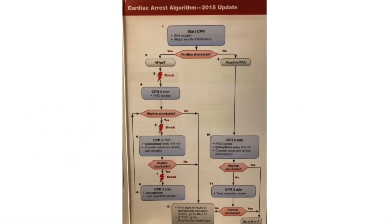The cardiac arrest algorithm starts with — and more importantly — the recognition of cardiopulmonary arrest. The focus should be on the things we know improve outcomes. For out-of-hospital cardiac arrest, we primarily see VF and pulseless VT, and that is primarily due to acute coronary syndromes.